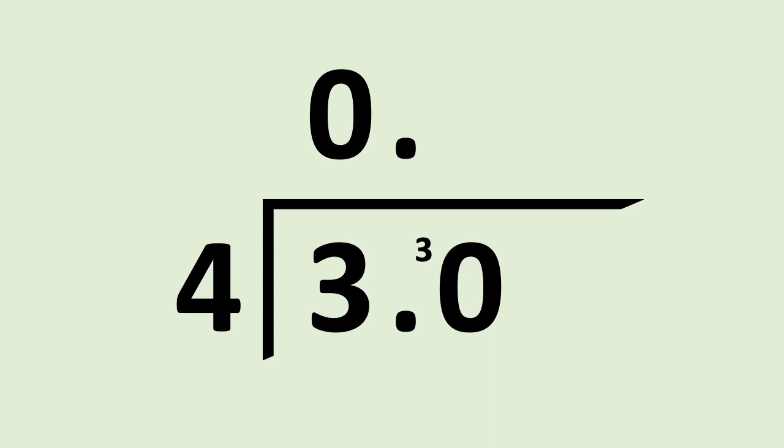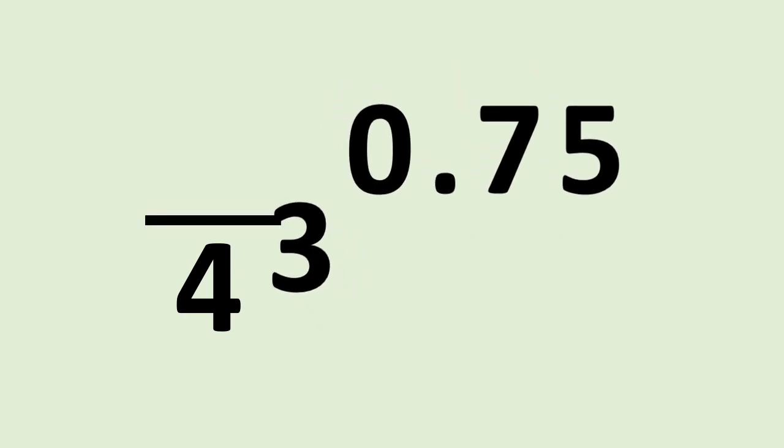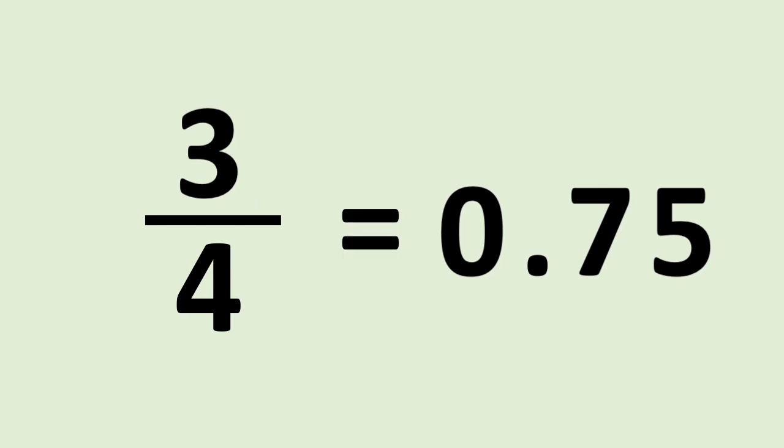How many fours go into thirty? Seven. Remainder two. Add another placeholder zero, carry the two. How many fours go into twenty? Five. So three quarters is equal to 0.75. And that's how you convert a fraction into a decimal number.